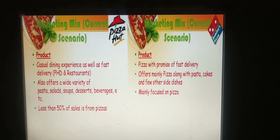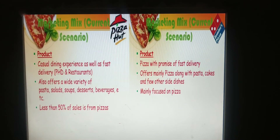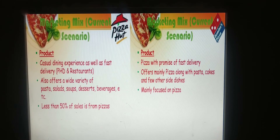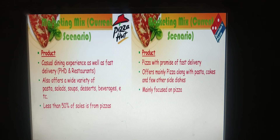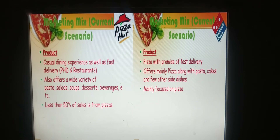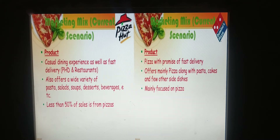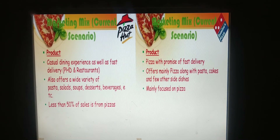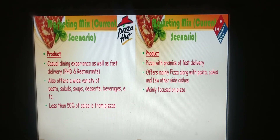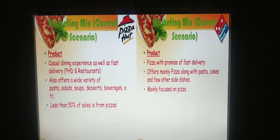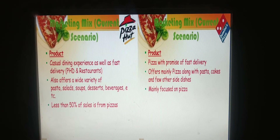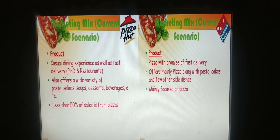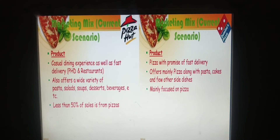Next is the marketing mix. The product for Pizza Hut is a casual dining experience as well as fast delivery, and it also offers a wide variety including pasta, salad, soup, desserts, and beverages — with less than 50% of sales coming from pizzas. Domino's Pizza, on the other hand, focuses on pizza with the promise of fast delivery, offering mainly pizza along with pasta, cakes, and a few other side dishes, and is mainly focused on pizza.